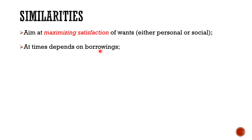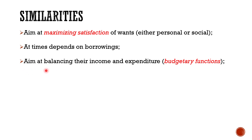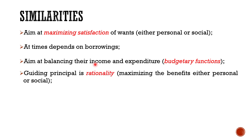Third, both aim at balancing their income and expenditure — these are budgetary functions. Both public finance and private finance have income and expenditure, and the ultimate aim of both is to balance them. If expenditure exceeds income, borrowings may be needed; if income exceeds expenditure, there is a surplus budget. But most of the time both aim at equalizing income with expenditure.